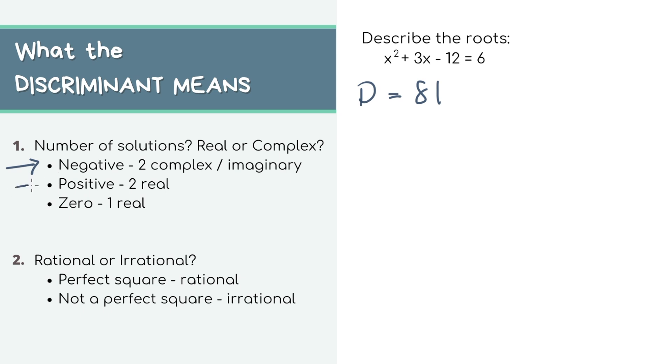If your discriminant is positive, like our positive 81, then you know that we have two real roots. In the third scenario, if you end up getting zero as the discriminant, you know that you have one real root.